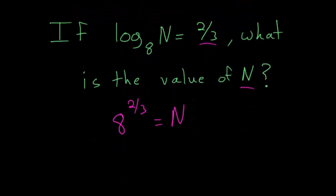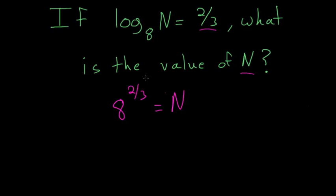And now to solve this we just have to remember what fractional exponents mean. So 8 to the 2 thirds is the same thing as 8 squared and then you take the cubed root of it. So the numerator of this fractional exponent denotes what power you raise it to and the denominator denotes which root you take of it.